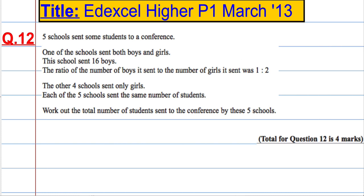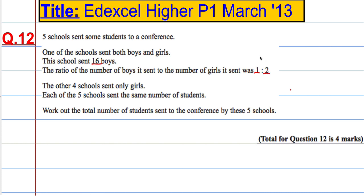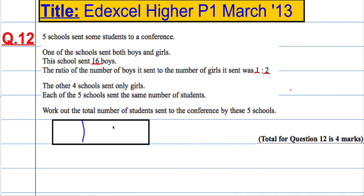We've got one school sending both boys and girls. We know it sent 16 boys, and the ratio of the number of boys it sent to the number of girls was one to two. So for every one part boys, you have two parts girls. Let's see what that would look like in a picture. I've got one part boys and two parts girls. Boys are represented by the first box and the girls are represented by these two boxes here — boys to girls.